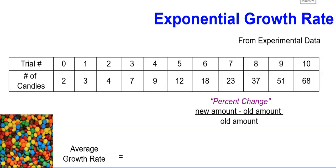To find out the average growth rate, we're going to use percent change. We're going to look at how it changed from one trial to the previous trial.